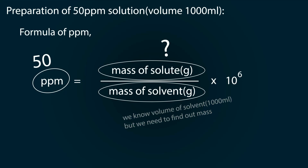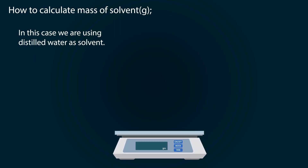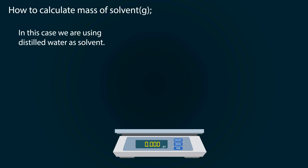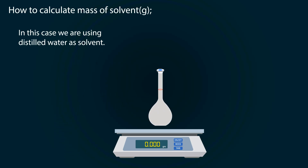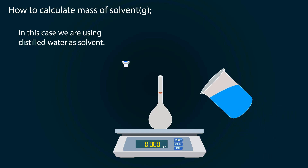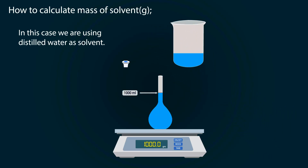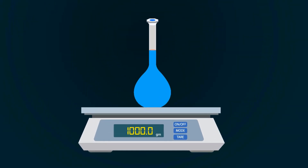We are taking distilled water as our solvent. Take a weight balance and power it on. Put the volumetric flask on it and tare it down. Open the cap and start adding distilled water into the volumetric flask up to the 1000 milliliter mark. Note down the reading — we get 1000 grams of solvent.